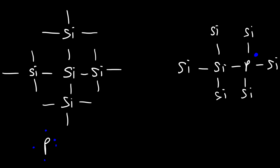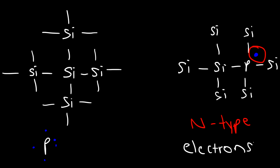That extra electron increases the conductivity of the silicon crystal. You only need to add a small amount of phosphorus to a large silicon crystal to increase its conductivity significantly. This is known as an n-type semiconductor. The charge carriers of this type of semiconductor are electrons. That's one way to increase the conductivity of silicon — by adding atoms with 5 valence electrons to create an n-type semiconductor.